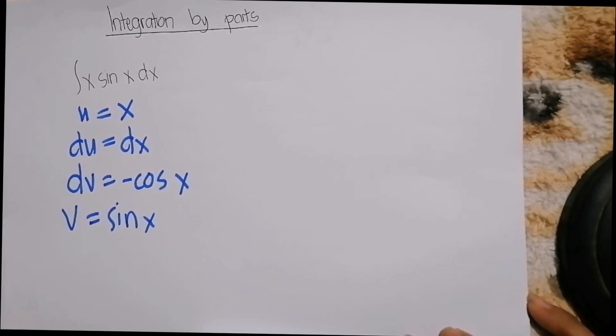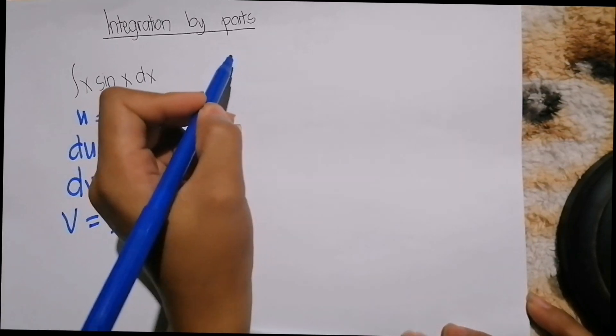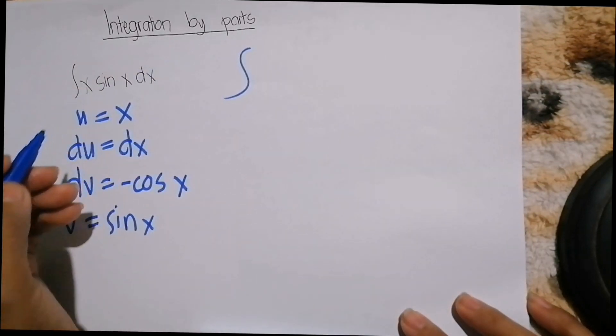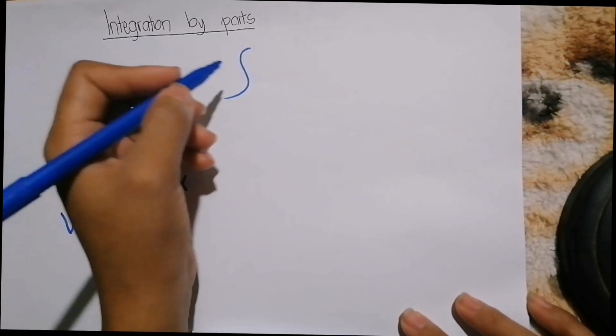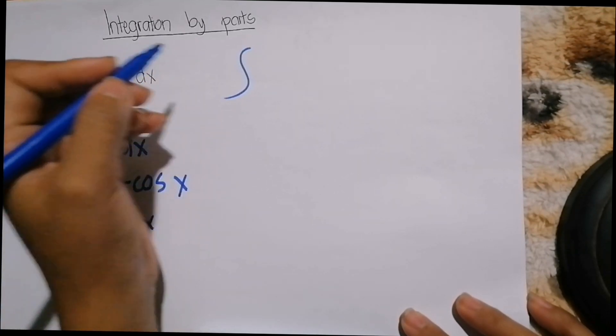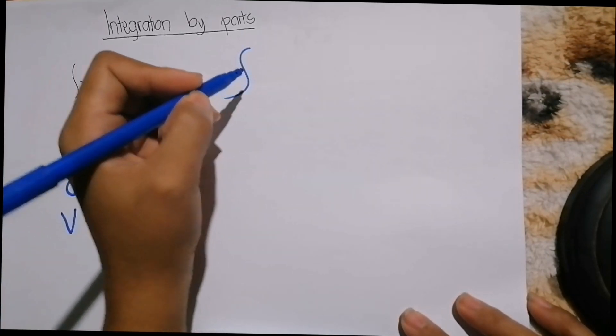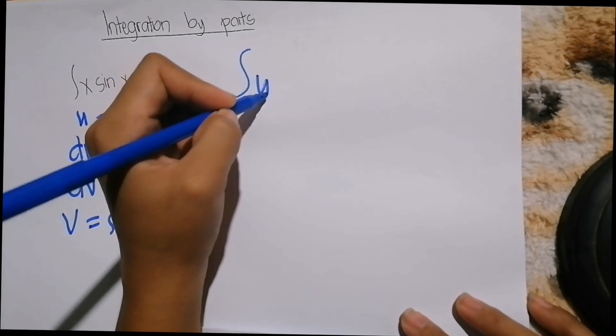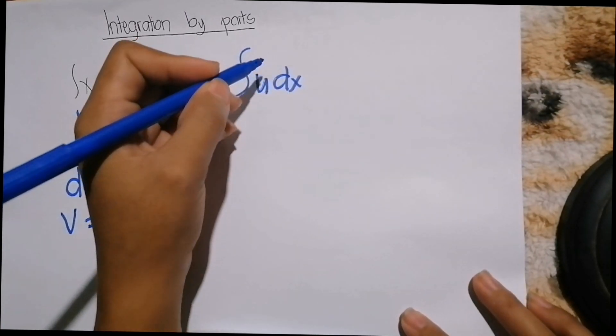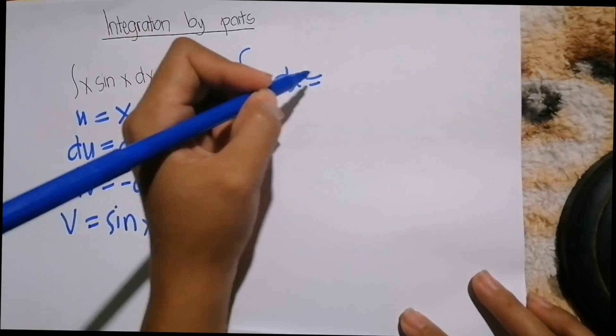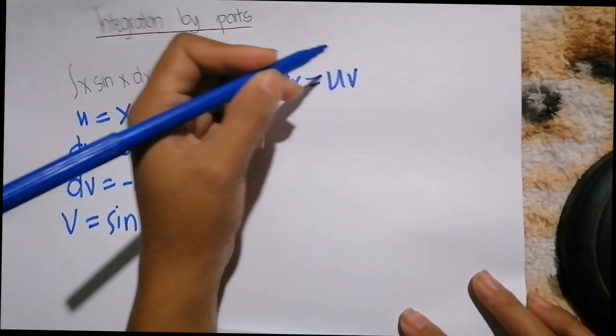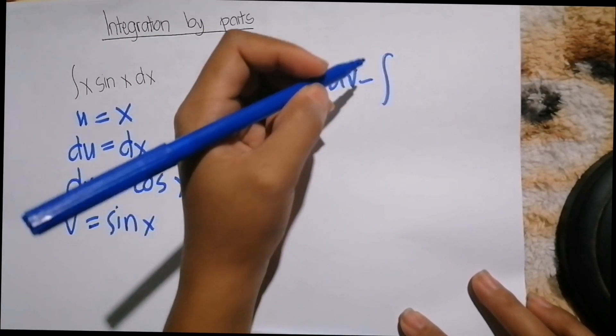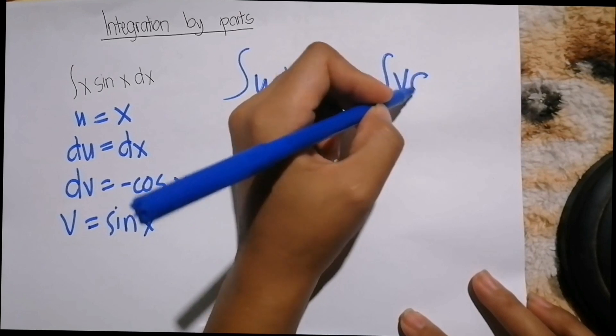So now, this is our formula or equation, which is: the integral of u dx is equal to u v minus the integral of v du.